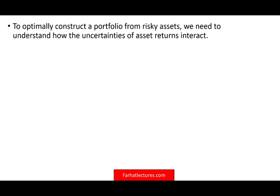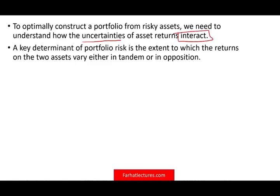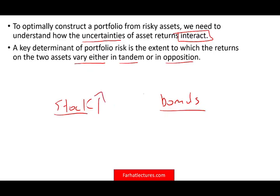To optimally construct the portfolio of risky assets, we need to understand how the uncertainties of the asset returns interact with each other. A key to this interaction of portfolio risk is the extent to which the return of the two assets vary either in tandem or in opposition. When selecting two risky assets — stocks and bonds — historically when stocks go up, bonds go down, or when stocks go down, bonds go up. So there is a kind of inverse relationship.